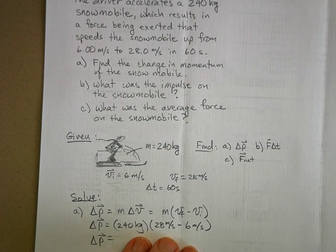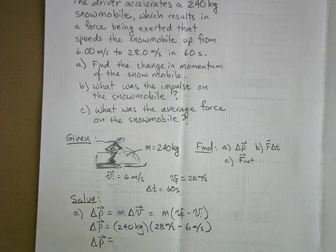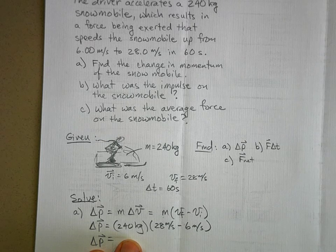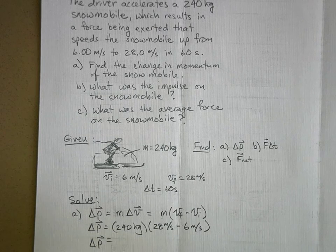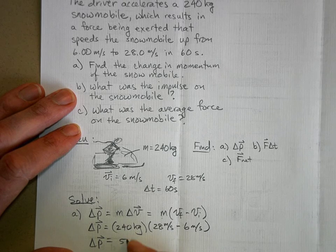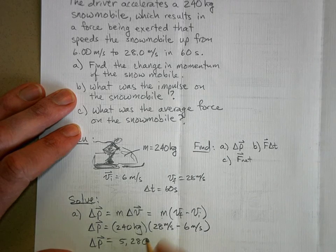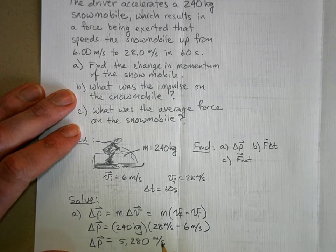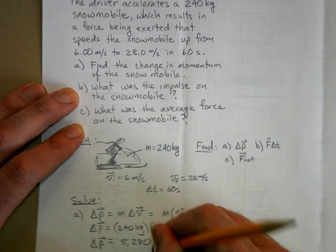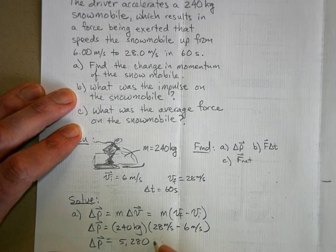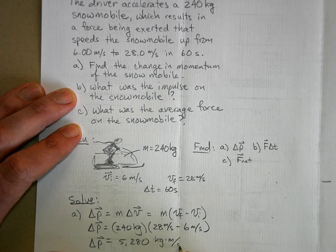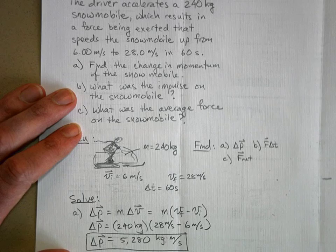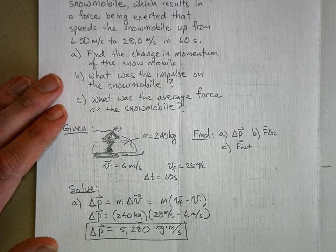And so my change in momentum is equal to, well, what's 28 minus 6 is 22, so I'll just go 22 meters per second times 240 kilograms, and you get 5,280, and what are the units? Kilogram meters per second. That's my answer for part A. Y'all agree with that?